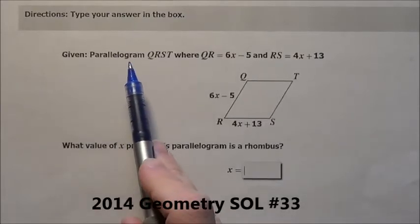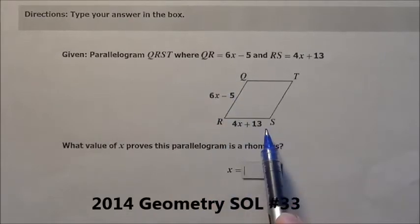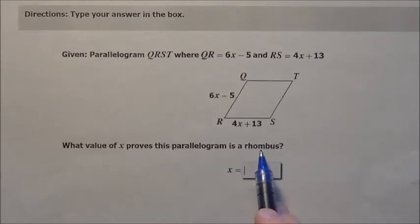Here's problem 33. It says given parallelogram QRST and they give us the lengths. It says what value of x is going to prove that this parallelogram is a rhombus?